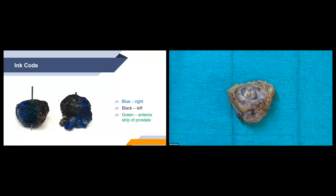Our ink code at our institution uses blue for the right half — the right portion of the prostate gland, right seminal vesicle, and right vas deferens — and black for the left half. We use a green anterior strip down the center of the prostate, running from the opening of the urethra on the base to the apex, as shown in the diagram where a probe is going through the center of the urethra.